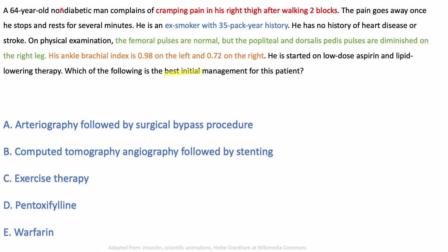A 64-year-old non-diabetic man complains of cramping pain in his right thigh after walking two blocks — limb pain on exertion. The pain goes away once he stops and rests for several minutes. This is typical of intermittent claudication, which is stage 2 peripheral arterial disease. He is an ex-smoker with a 35 pack-year history and no history of heart disease or stroke, ruling out atherosclerosis elsewhere.